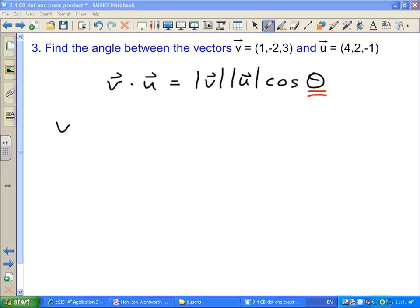So let's start on the left-hand side. We've got V dot U. Well, we're told what the vectors V and U are, so it's pretty straightforward to figure out what the dot product of V and U are. This is going to be (1,-2,3) dotted with (4,2,-1).